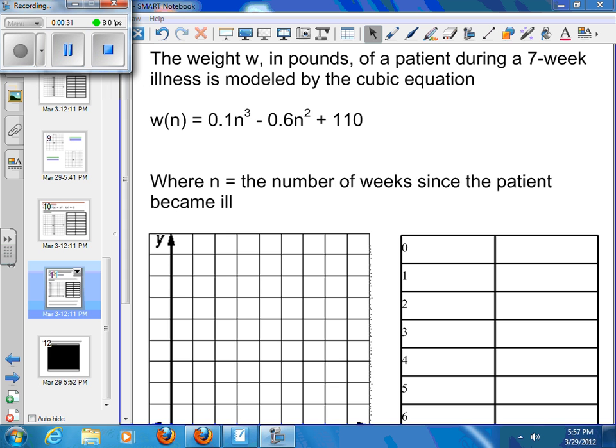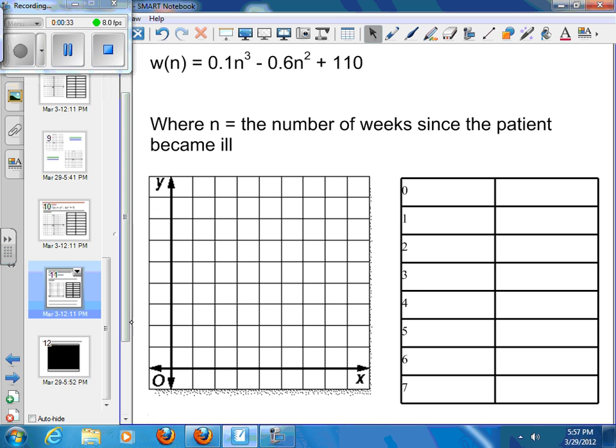So again, we're going to just plot points and plug and chug and see what we can come up with for what a graph is going to look like. It's a cubic, so it should be our typical curve. Our leading coefficient is positive, so I've got that going the wrong way. So we should be coming in this way.